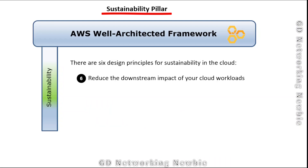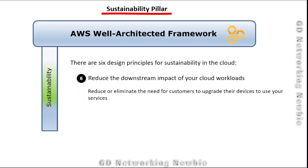The sixth design principle is to reduce the downstream impact of your cloud workload. Downstream impact means reducing or eliminating the need for customers to upgrade their devices to use your services. If you are making changes, they should not compel customers to make changes or upgrade their devices — we should be avoiding such things.